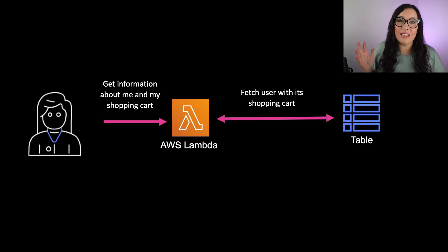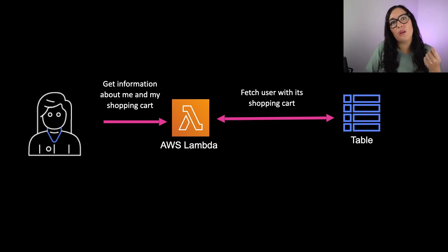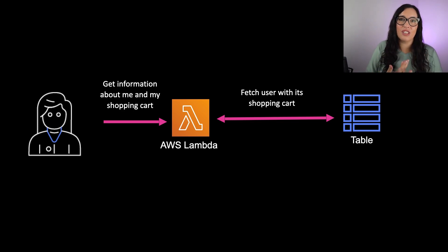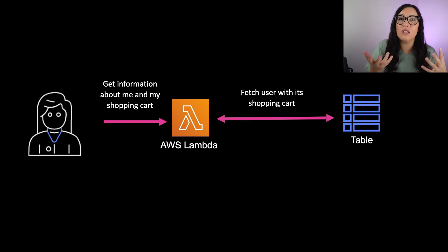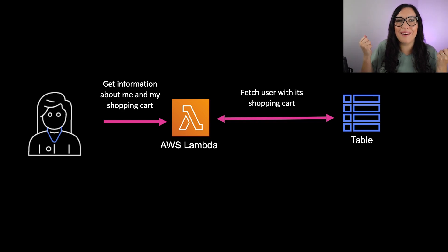Going back to the single table design and the e-commerce example — how it should look when you have designed this table to serve your access patterns. When you want to get information from the shopping cart for a user, you just search the user information and you will get all the information from the shopping cart. No need to do two queries as you would in a relational database. The idea is to reduce the amount of Dynamo queries to as little as you can — ideally only one per access pattern.